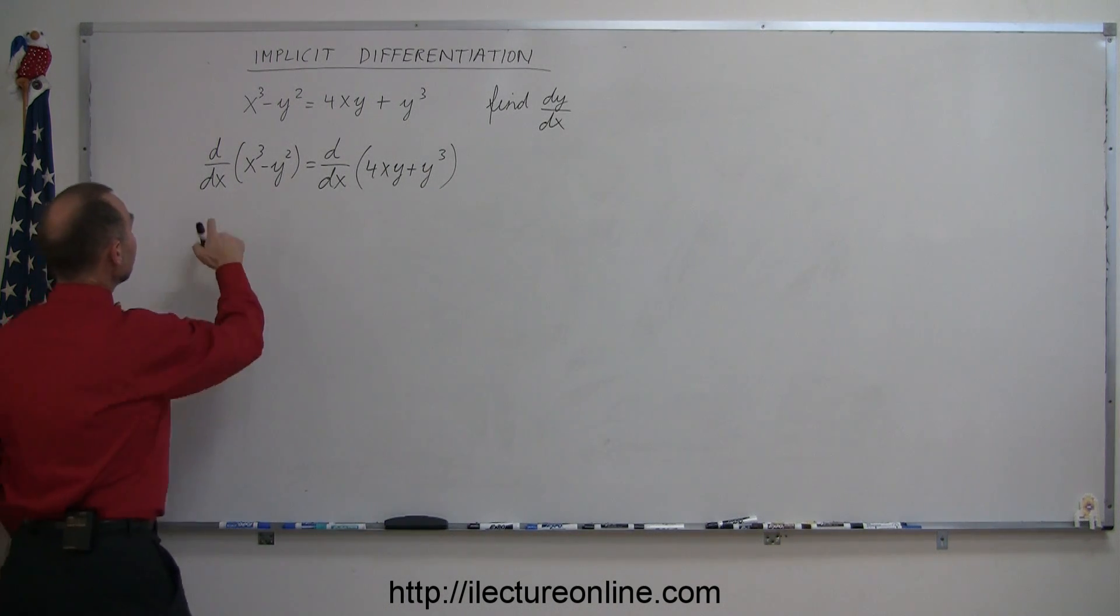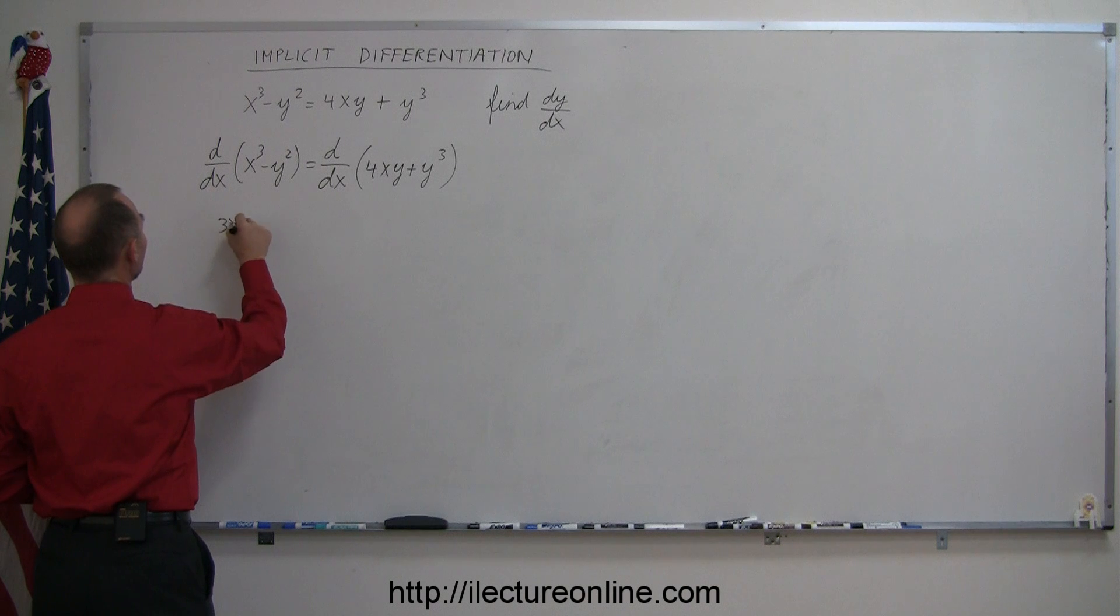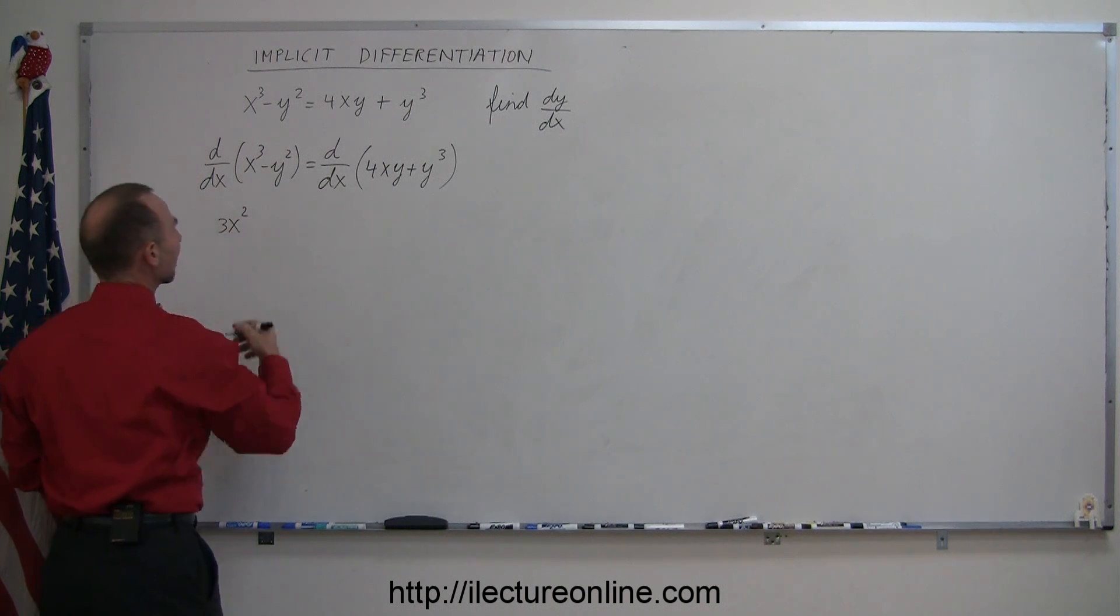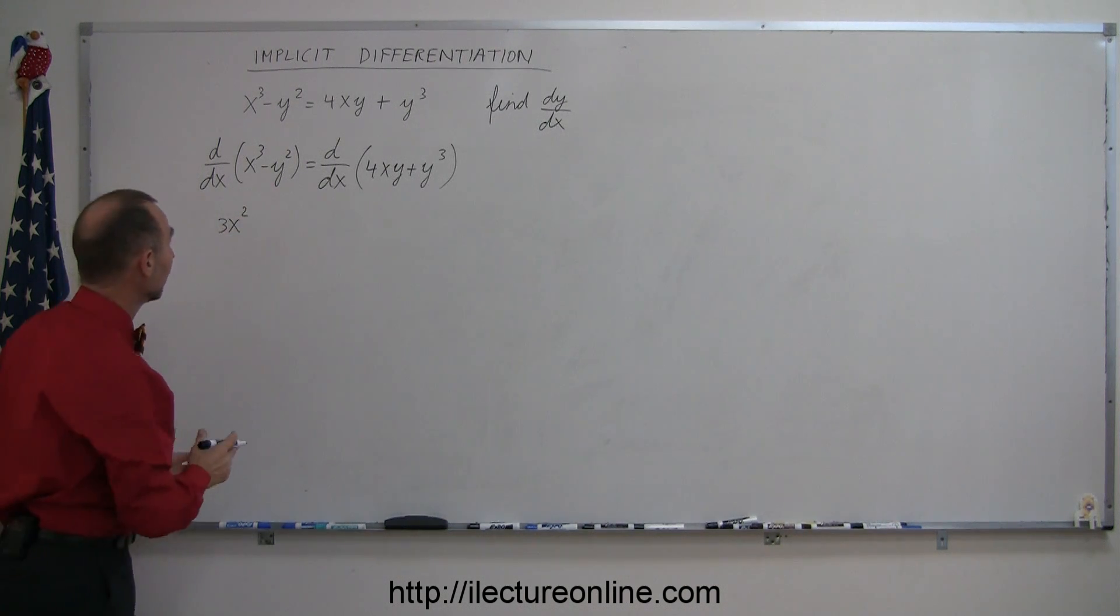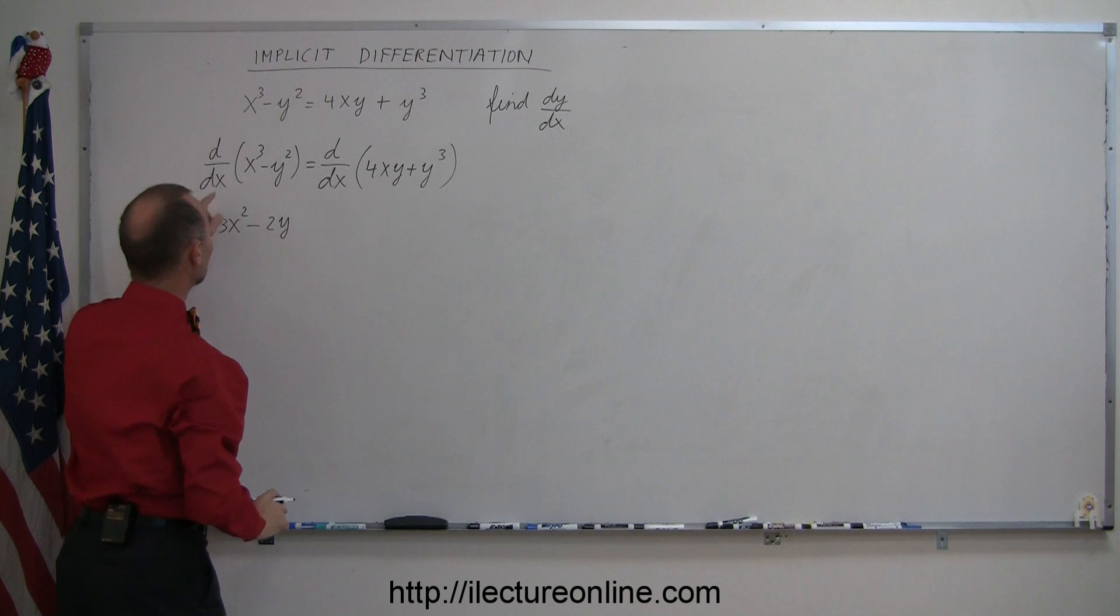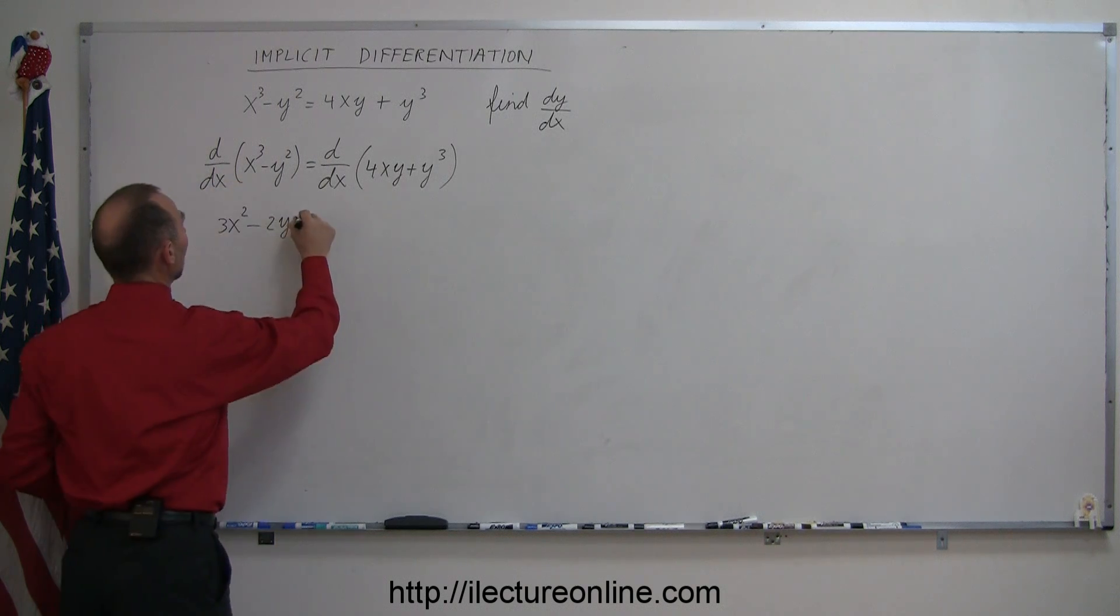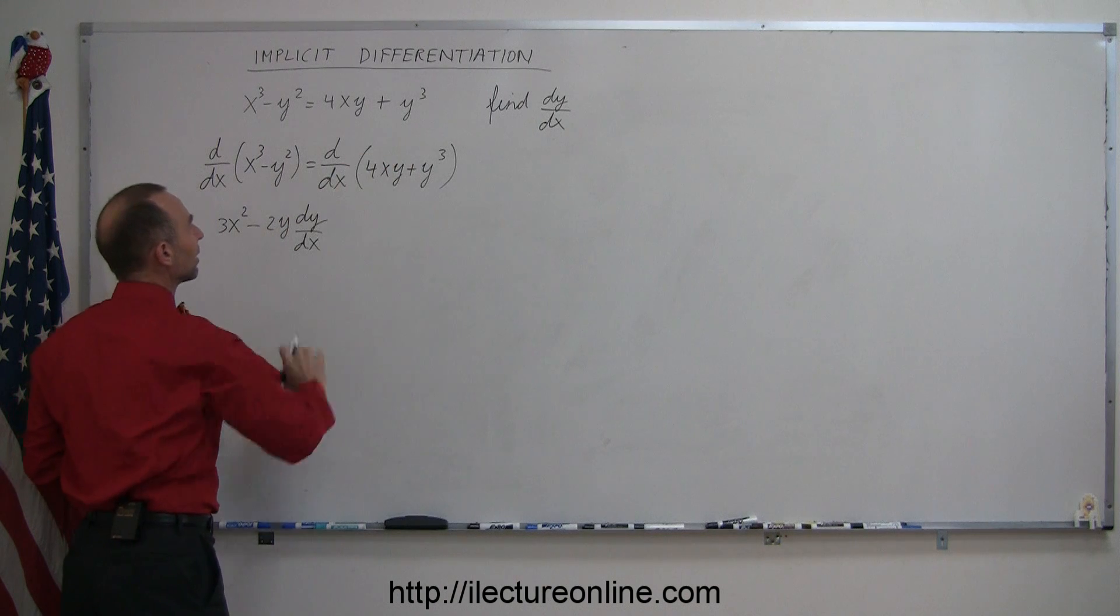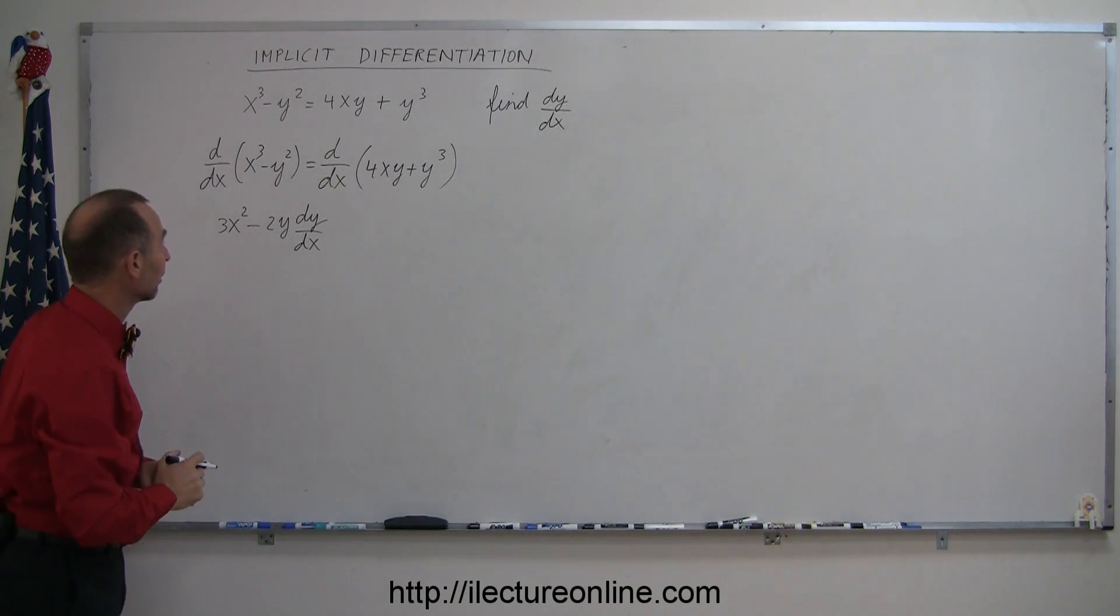On the left side, the d/dx of x³ is 3x² times dx/dx, which we don't have to write because that's simply 1, minus the derivative of y², that would be 2y to the first power, but here we take the d/dx of y, which is dy/dx. And there is the first one of these dy/dx's we're going to find in our equation here.